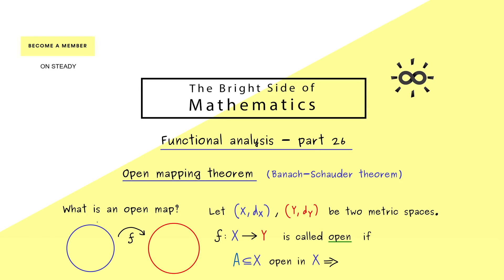In other words, if we take any open set A in X, then the image f[A] should also be an open set. However, please don't forget the notion of openness is always given with respect to the corresponding metric space.